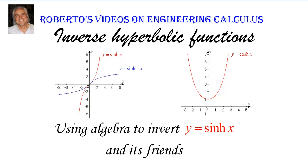The inverse graph should look like the reflection around the diagonal of the original function. So yes, we conclude that the inverse of sinh X exists. How about cosh X? Well, cosh X obviously is not invertible — it does not pass the horizontal line test.